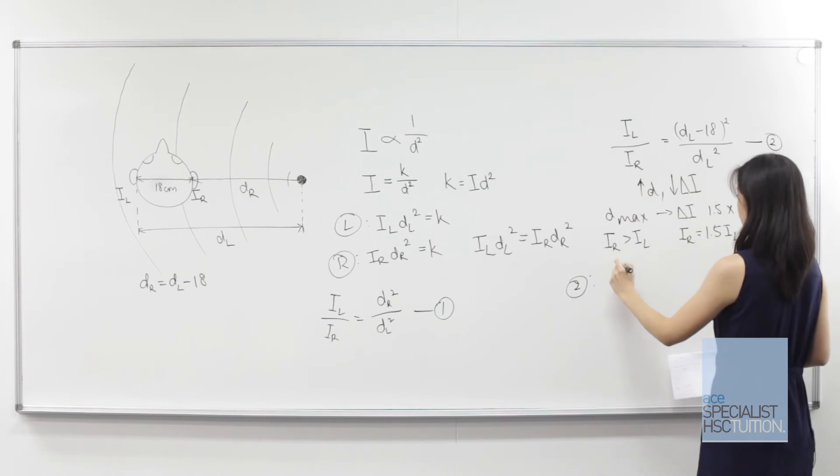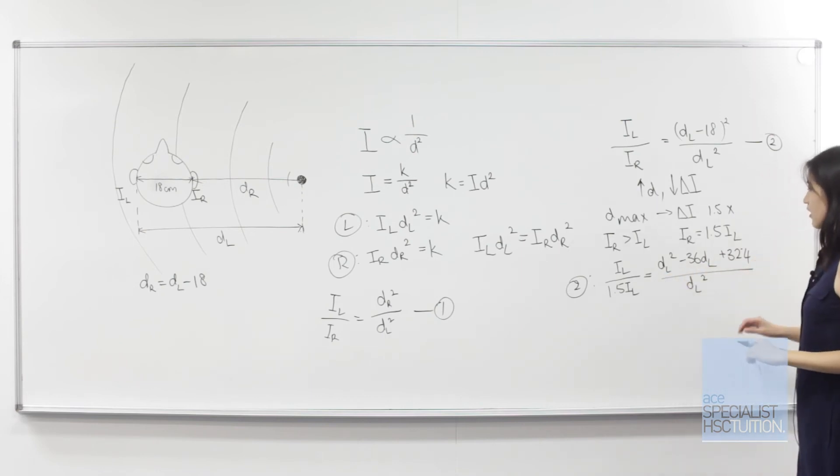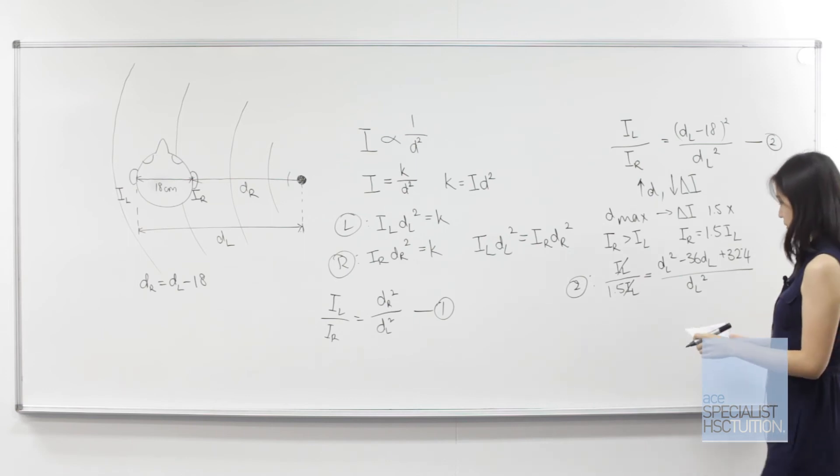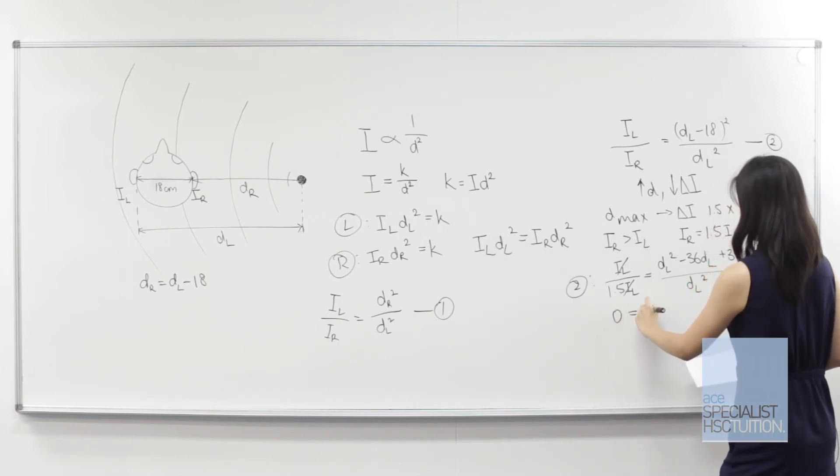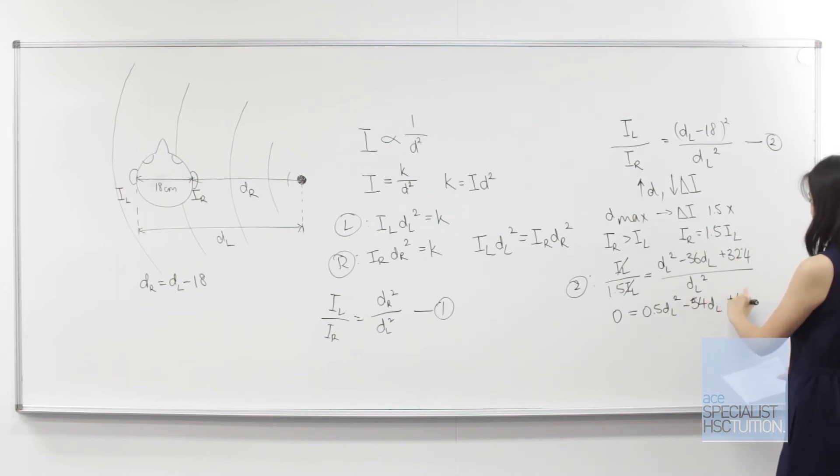From equation two, we have il over 1.5 il equals, expanding out the square, dl squared minus 36 dl plus 324 over dl squared. We can cancel the il's, and from this we have a simple quadratic equation: 0 equals 0.5 dl squared minus 54 dl plus 486. Using the quadratic equation, we get two values for dl.